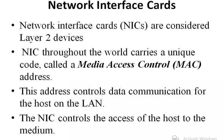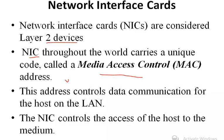The network interface card, or NIC, is considered a layer 2 — data link layer — device. Every NIC throughout the world carries a unique code called a MAC (Medium Access Control) address, which is 48 bits long. The first 24 bits are vendor-specific and the last 24 bits are specific to the NIC. This address controls data communication for the host on the LAN and controls the host's access to the medium.